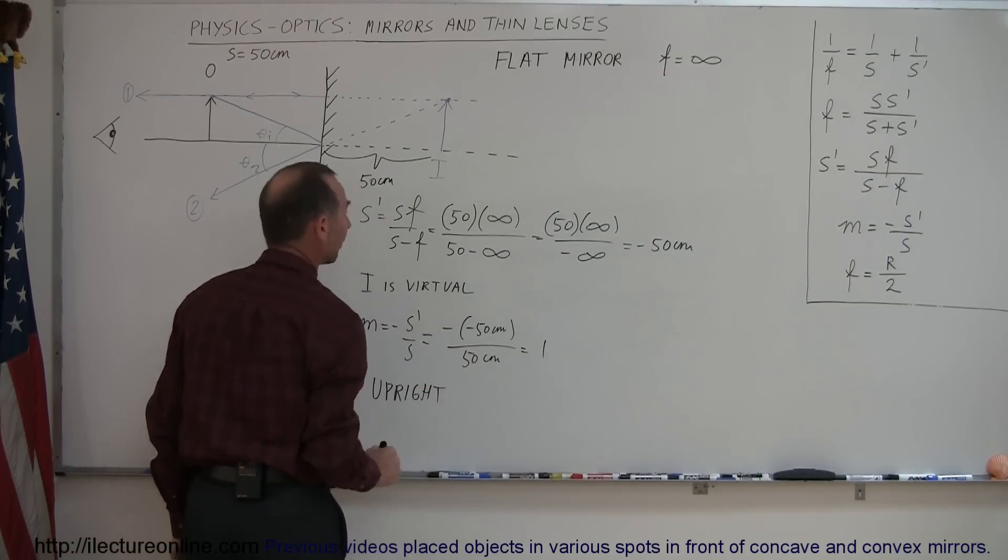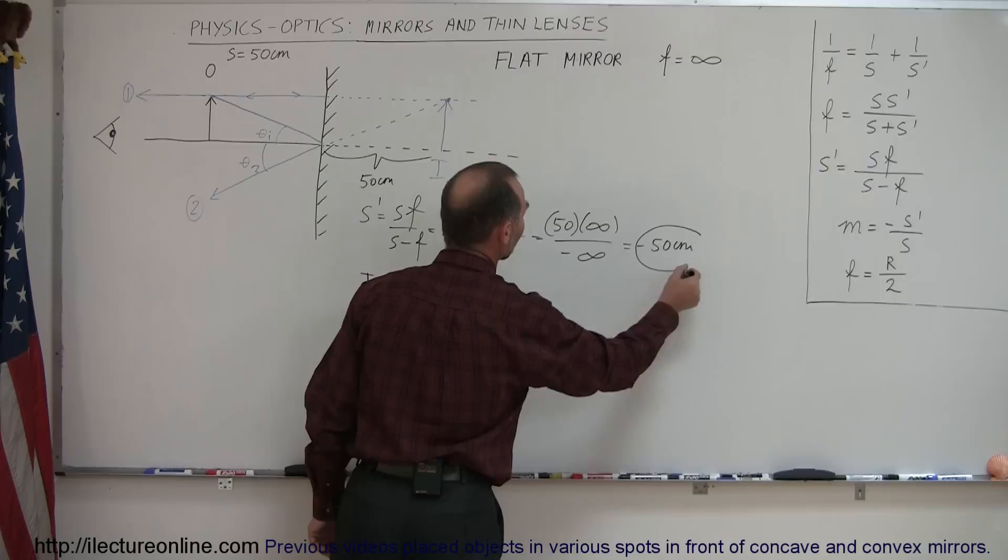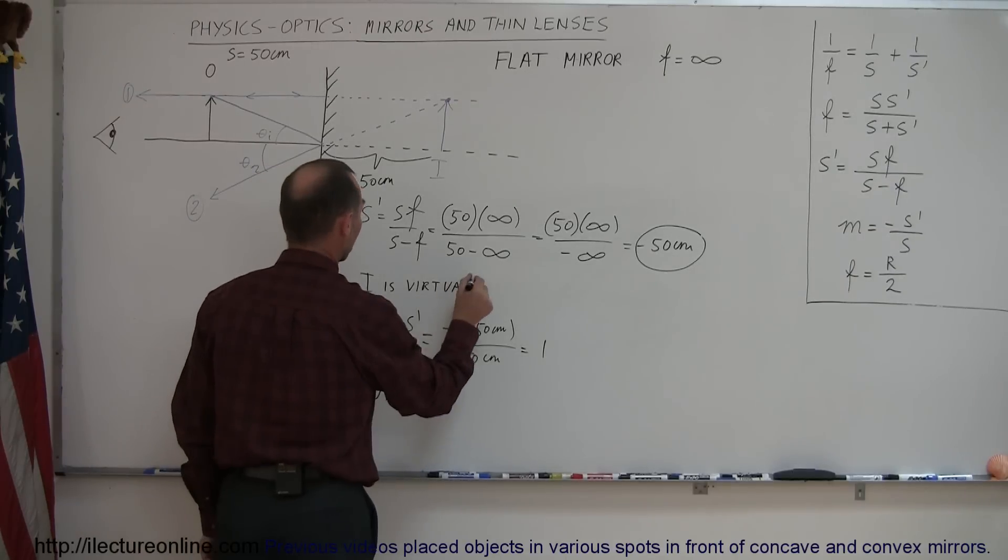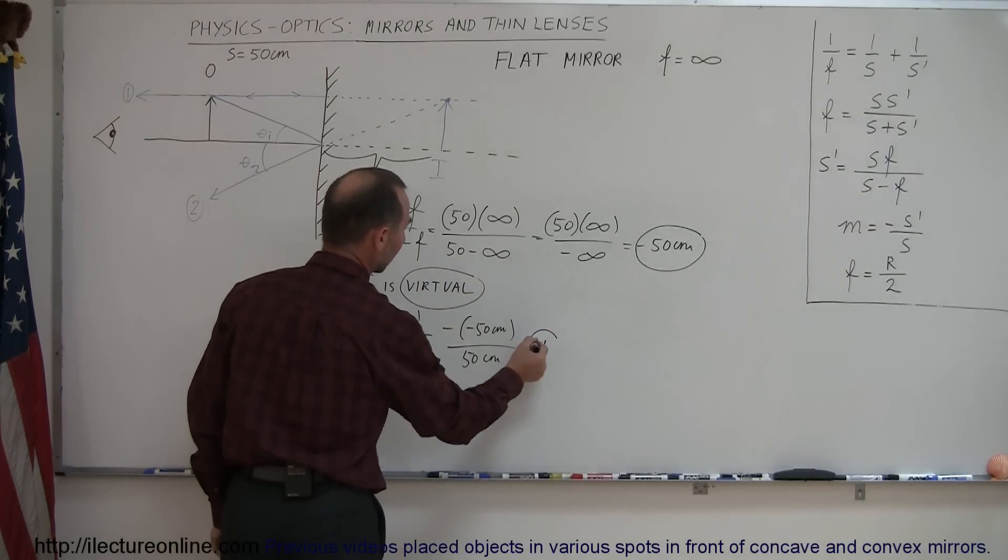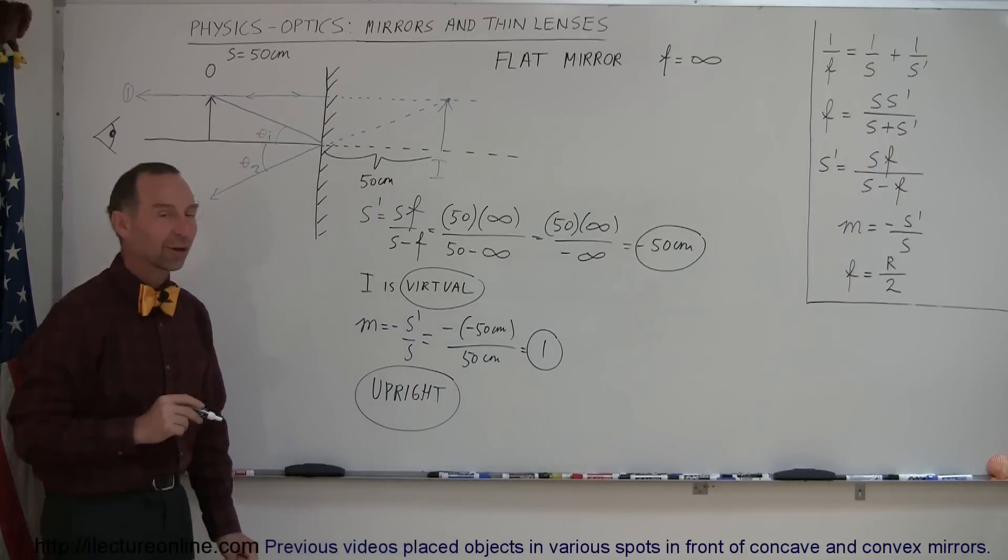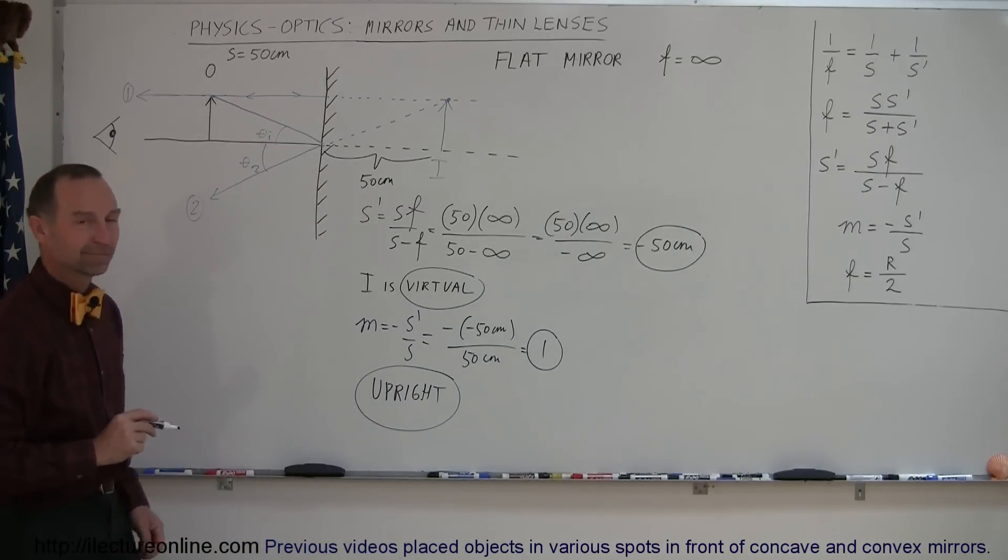So, with a flat mirror, we can find the image distance, which happens to be the same as the object distance, just behind the mirror, instead of in front of the mirror. We know that the image is virtual, we know that the magnification is 1, and we know that the image is upright. And that's how you work with flat mirrors. So, you're done.